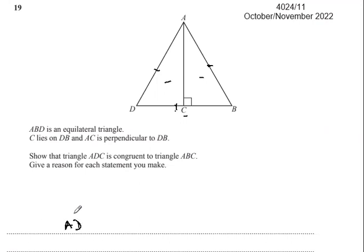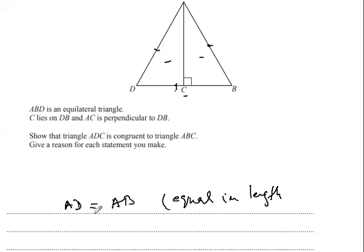The length AD in triangle ADC is equal to AB in triangle ABC. We can say that they are equal in length. We just write AD is equal to AB, and the length DC is equal to BC.